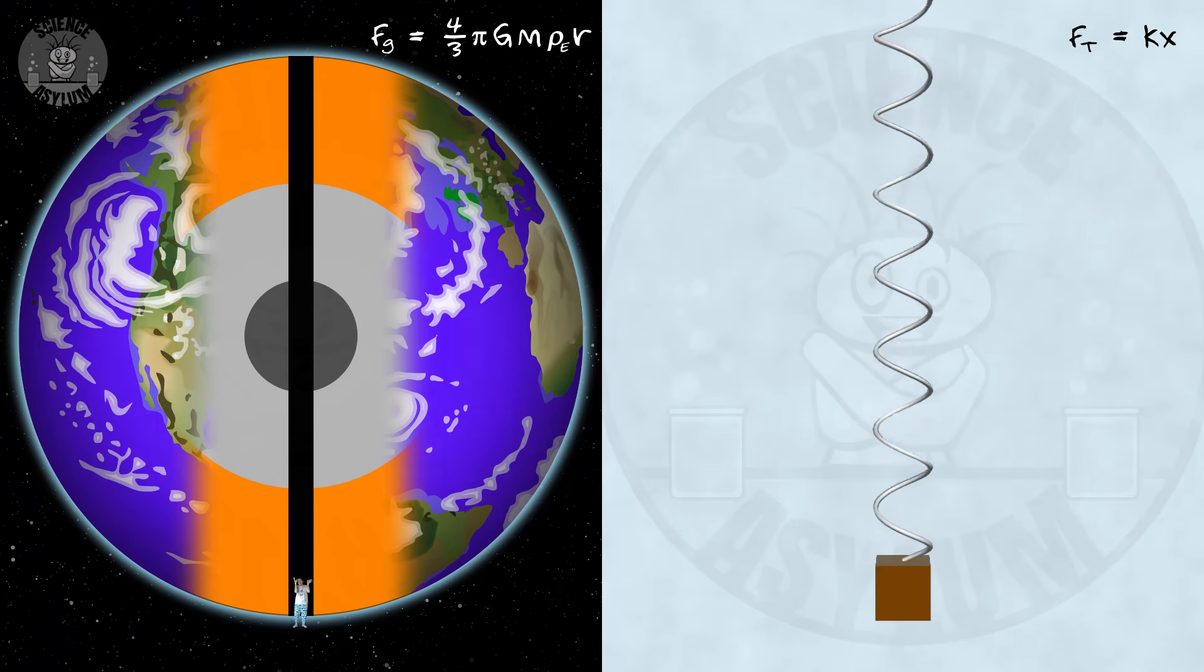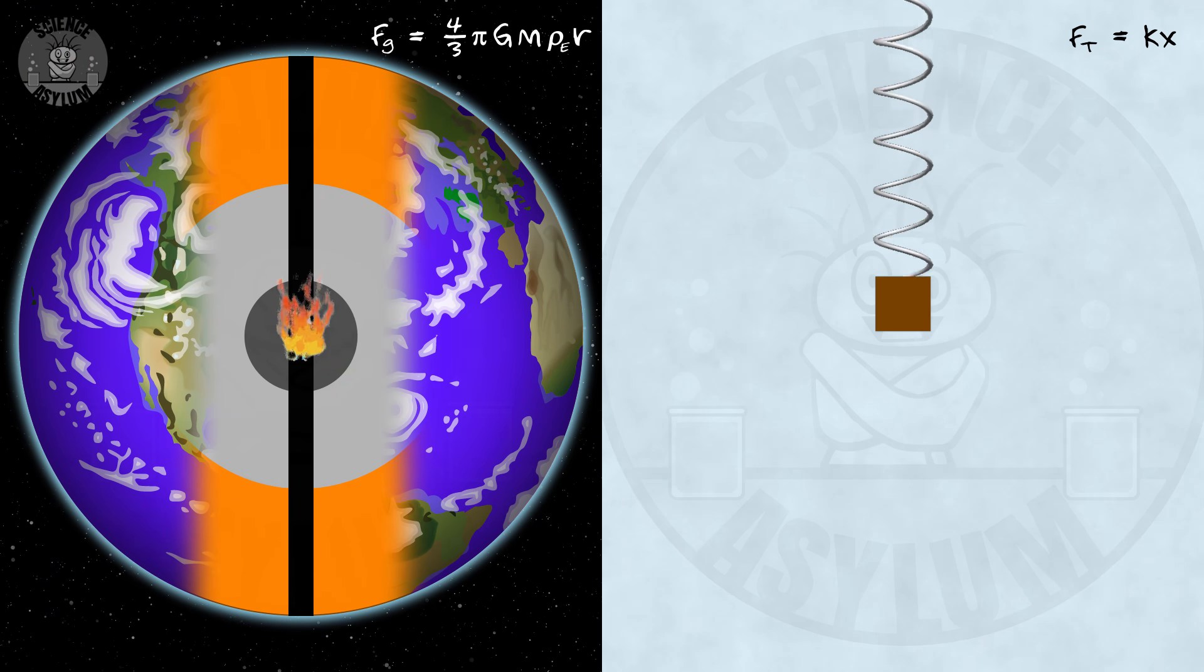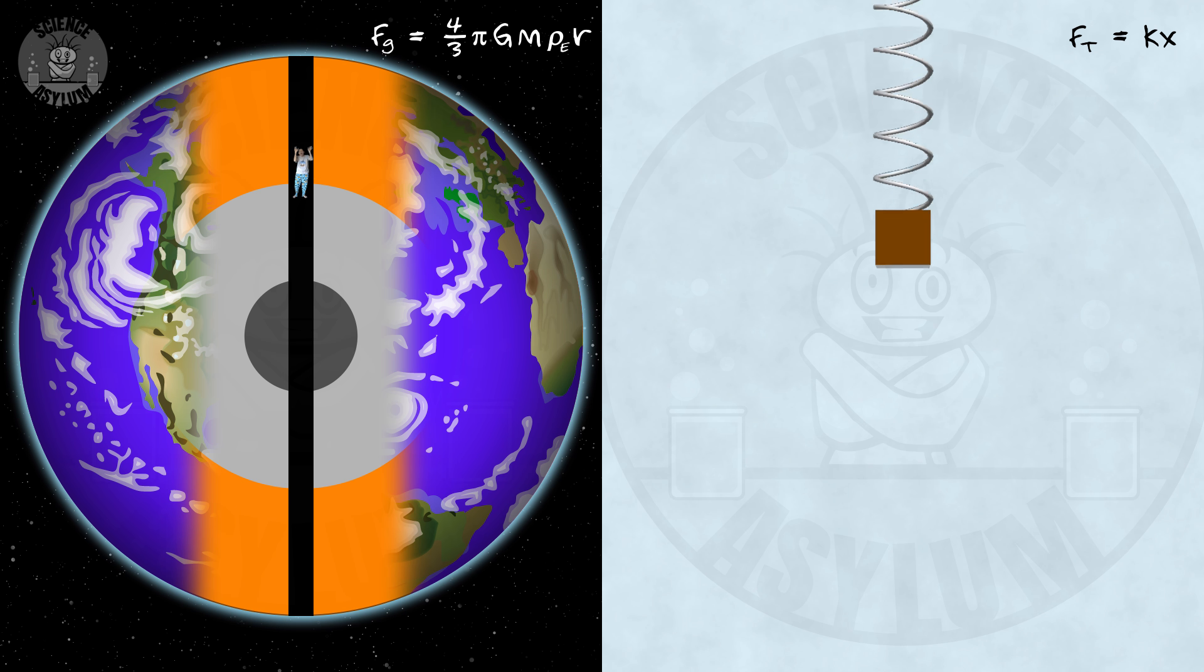I don't mean kind of the same. I mean exactly the same. The forces that govern both motions are some constant stuff times a distance. So it's only natural that their motions would be the same. We could have imagined this tunnel problem as a spring problem instead, and 42 minutes would still have been our answer.